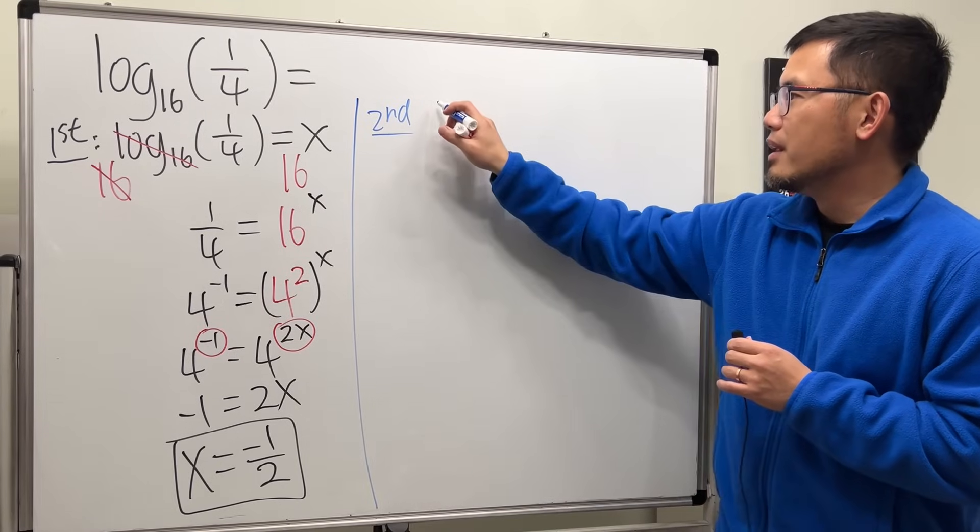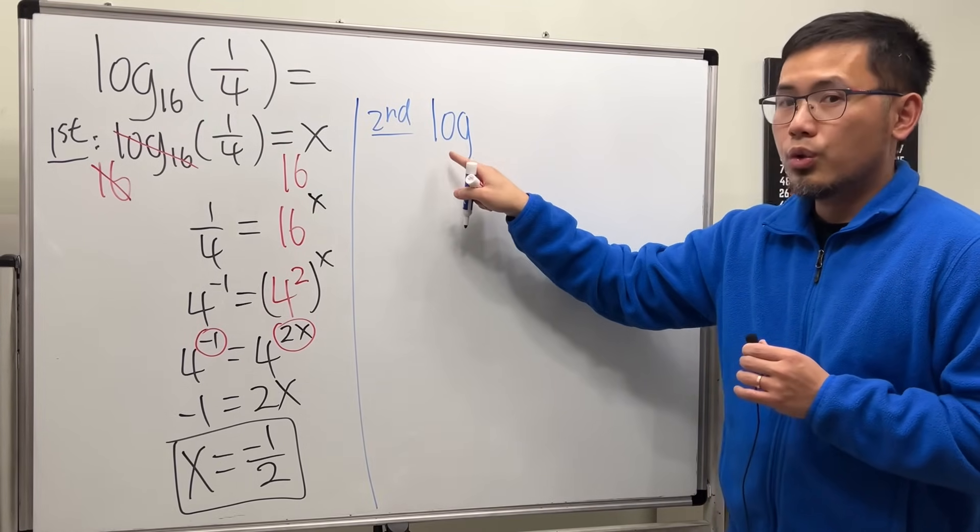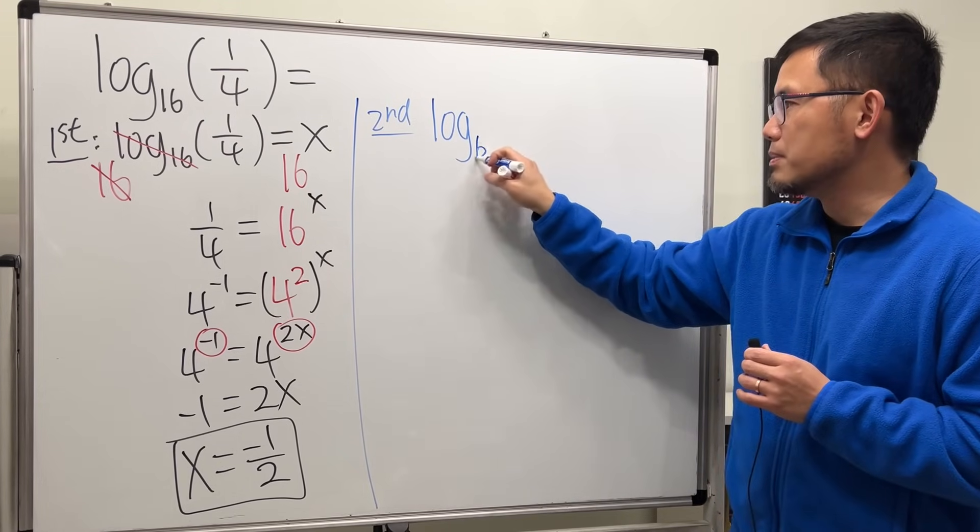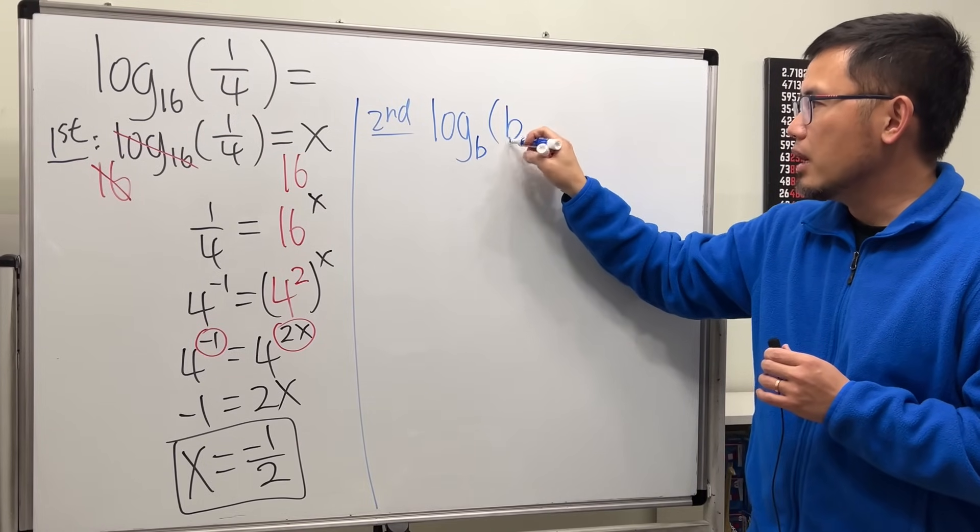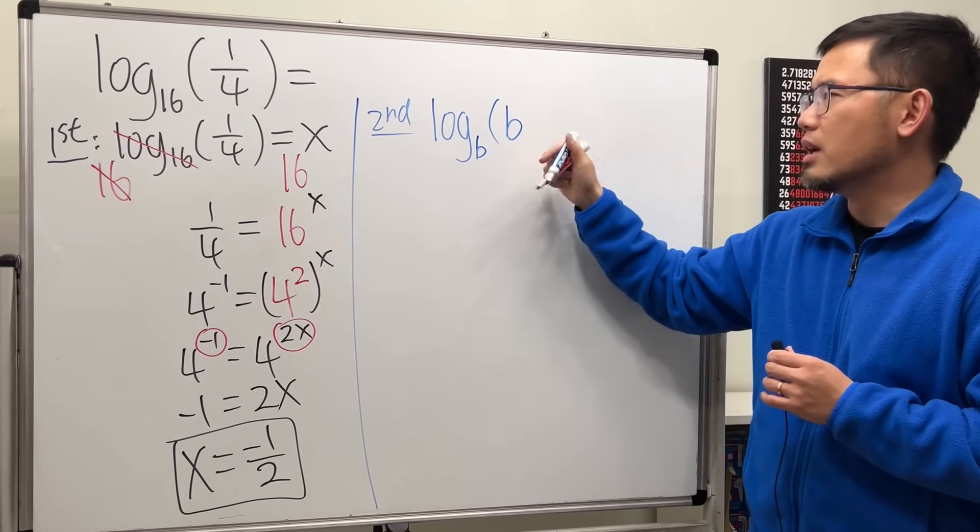For the second way, I would just like to tell you guys the following properties. The first property is when we have log with some base b right here, and then if the input also has a base b and maybe raised to some exponent, let's say m.